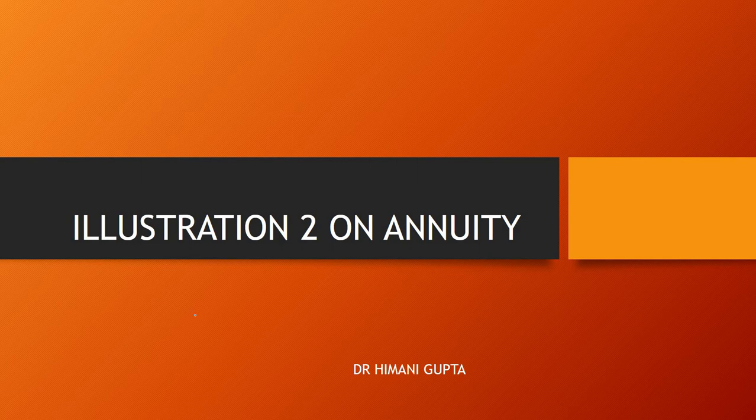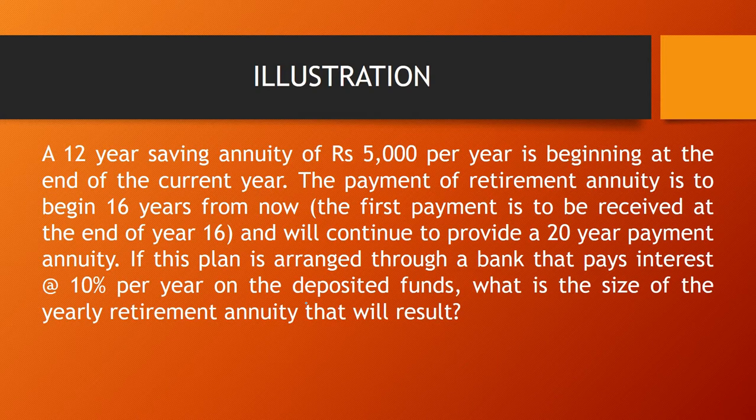Hello all, today I am back with one more illustration on annuity. This illustration says that a 12-year saving annuity of rupees 5000 per year is beginning at the end of the current year. The payment of retirement annuity is to begin 16 years from now, which means the first payment is to be received at the end of the 16th year, and it will continue to provide a 20-year payment annuity. This plan is arranged through a bank that pays interest at the rate of 10% per annum on deposited funds.